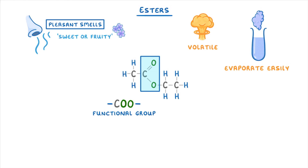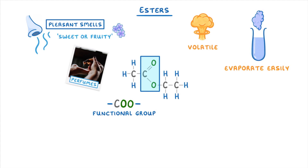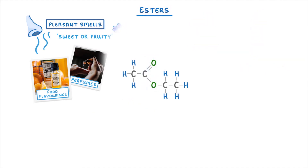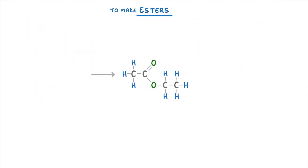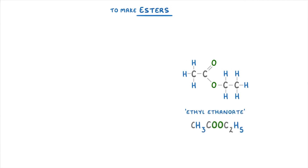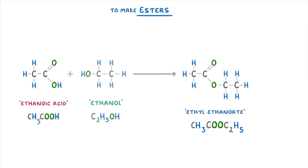And so for both of these reasons, esters are commonly found in things like perfumes, as well as in food flavorings. In order to make an ester we have to use a carboxylic acid and an alcohol. So to make this ester, which is ethyl ethanoate, we need to use ethanoic acid and ethanol.